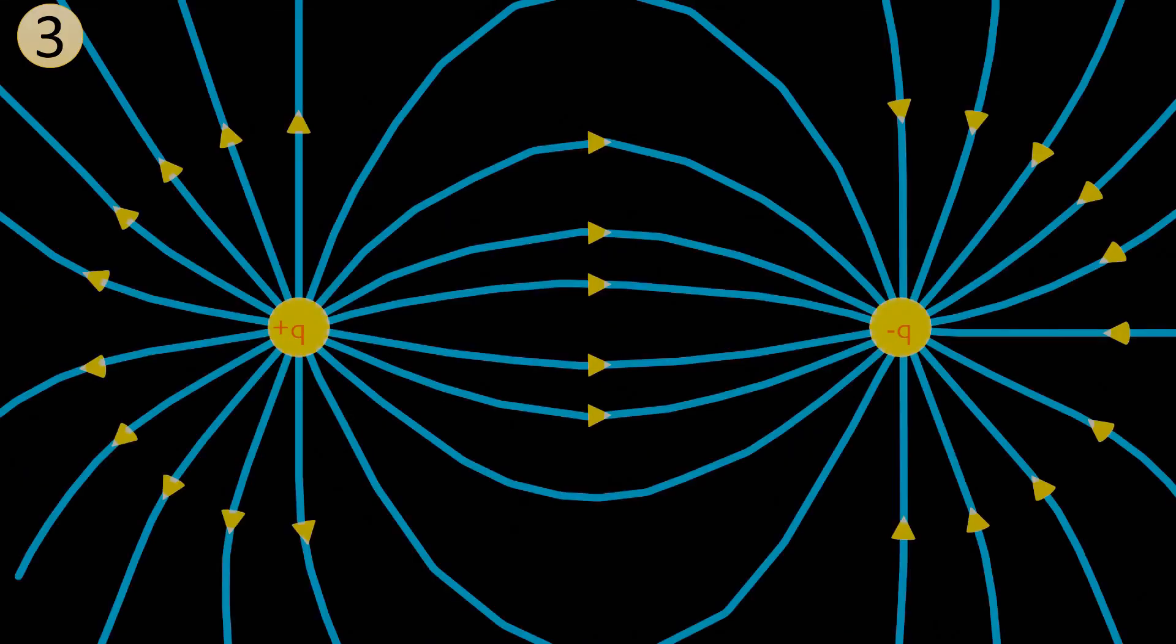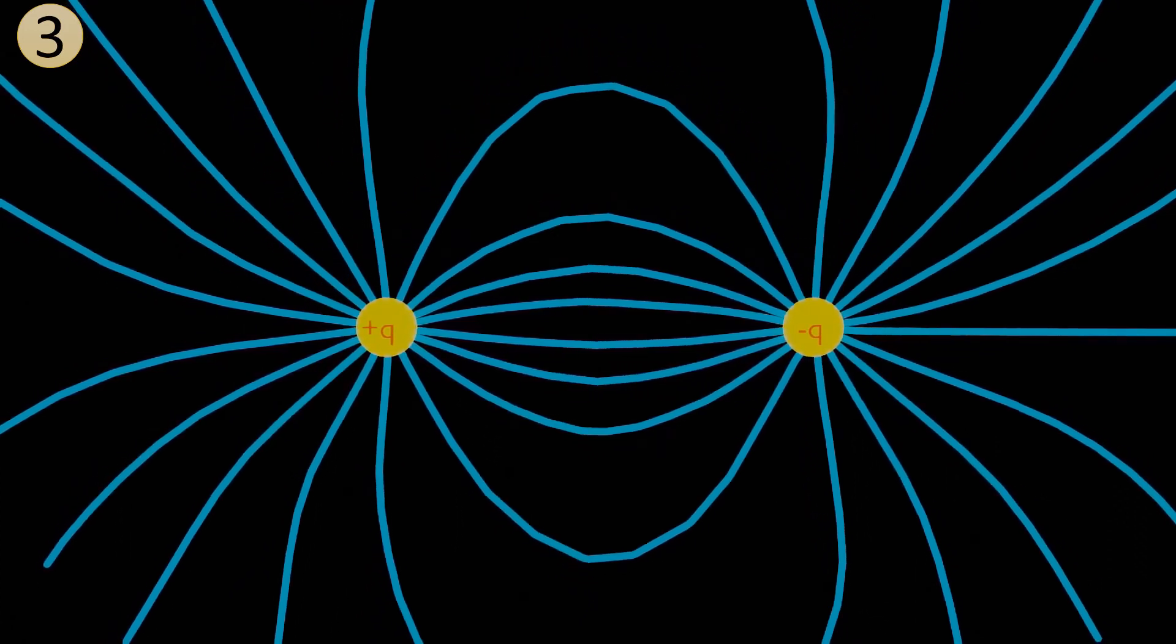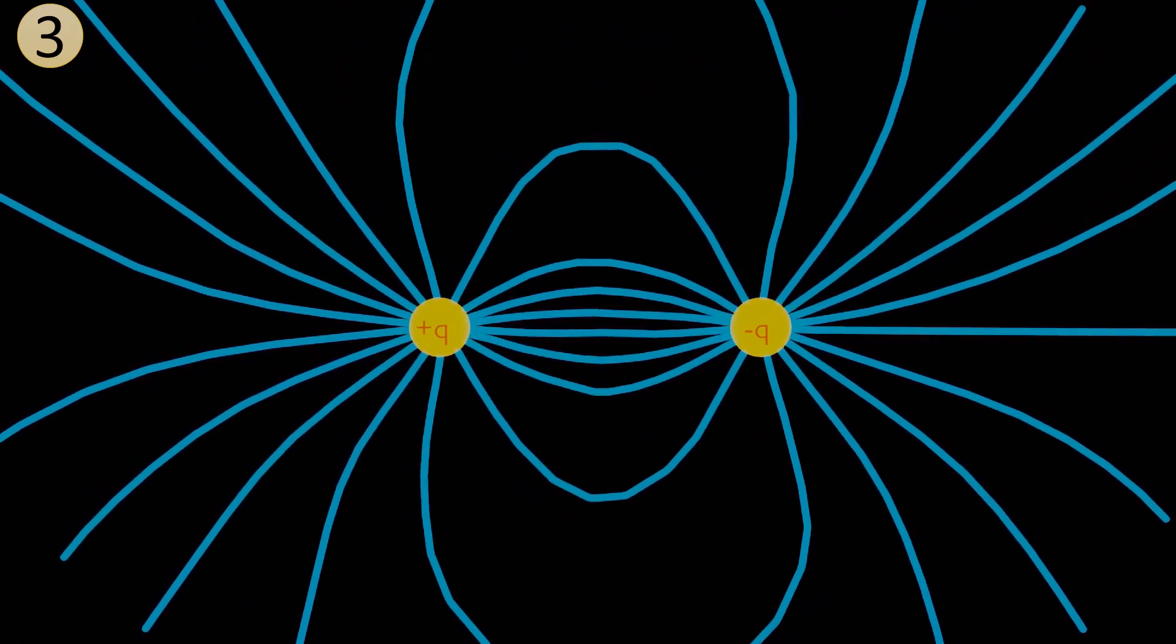However, if there are two opposite charges, the electric field lines contract and form a continuous curve in the same direction, creating an attractive force that we can feel.